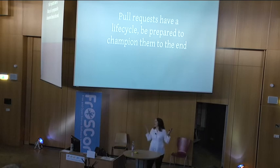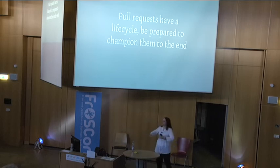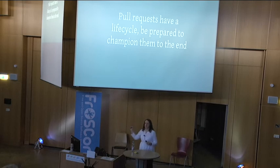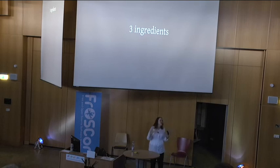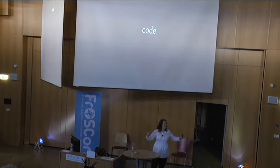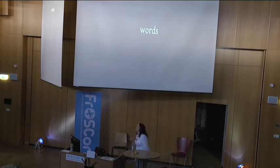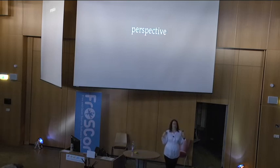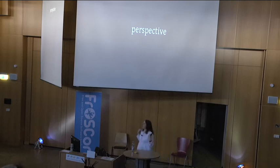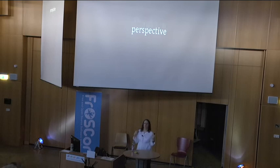Pull requests are not the throwing of code over the hedge — they're the beginning of a conversation. They have a life cycle, you may need to iterate, and other people may contribute before the feature is finished. But by starting the conversation, you become a contributor. To get your patch accepted, remember the three main ingredients: get your code correct, complete, and tested; write some words and explain why I care; and remember my perspective as a maintainer. Look at the roadmap of the project, think if your change fits — and with these three things, you will get your patch accepted.